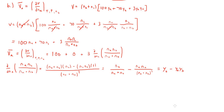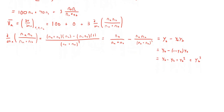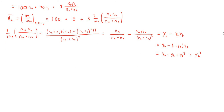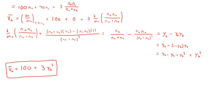The problem statement wants the expression in terms of just constants and YB, so I'm going to substitute in 1 minus YB for YA, because the sum of the mole fractions must equal 1. Now that we have it in terms of just YB, we can plug this derivative back into the expression to get the final answer: the partial molar volume of A is equal to 100 plus 3YB squared.